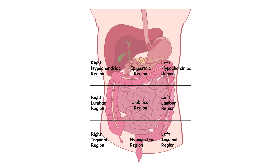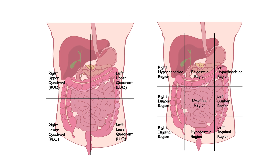This nine-region system gives us more detailed anatomical landmarks. For instance, locating a mass in the left hypochondriac region might lead a physician to investigate the spleen. The abdominal pelvic cavity is home to many major organs, and knowing where they sit is essential for both anatomy and clinical practice.